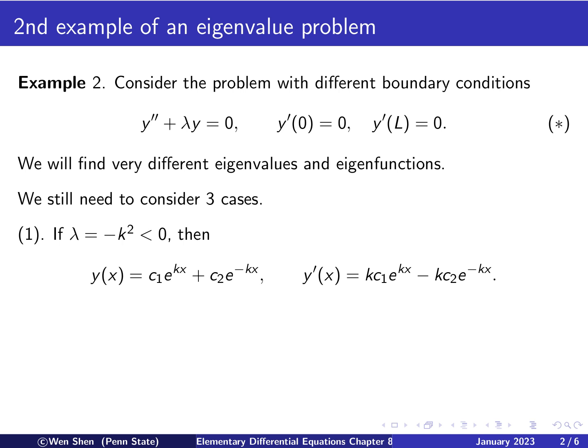Case 1, lambda negative, then we can write it as negative k squared, as we did before. Then the solution is exponential functions, so we'll have e to the kx, e to the negative kx, and then multiply by c1 and c2, and add them up.